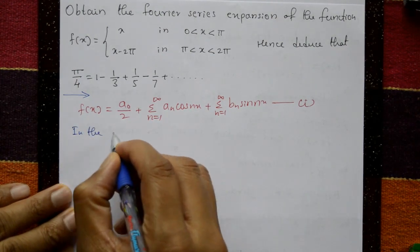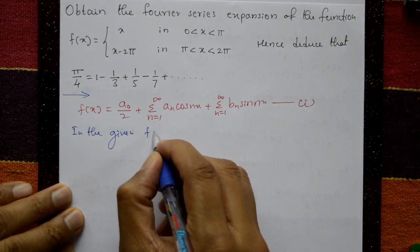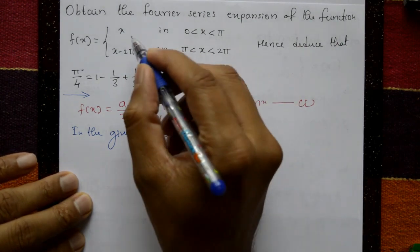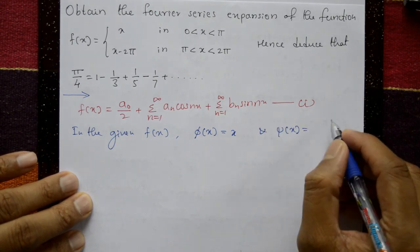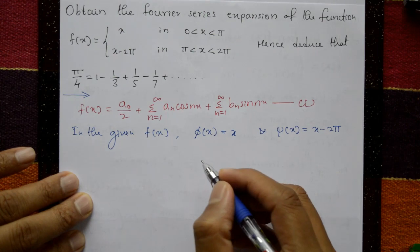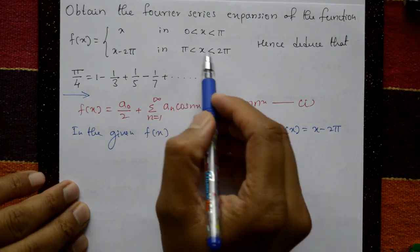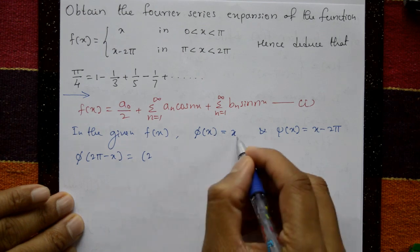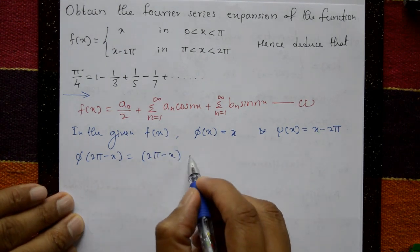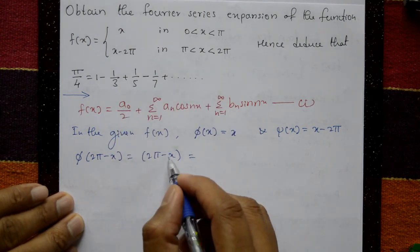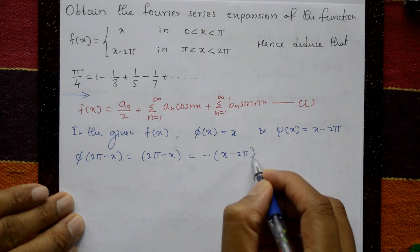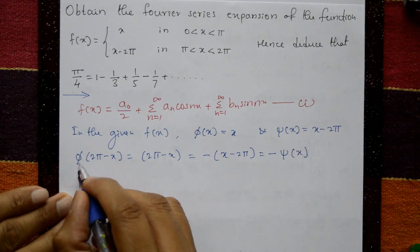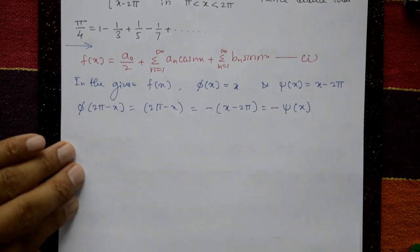In the given function, φ(x) = x and ψ(x) = x minus 2π. Since the interval is 0 to 2π, put x equal to 2π minus x. For φ(x), substituting x = 2π minus x gives 2π minus x. For ψ(x), which is x minus 2π, taking minus outside gives minus(x minus 2π), which equals minus ψ(x).